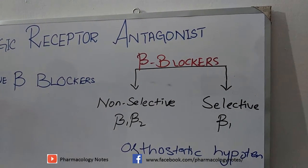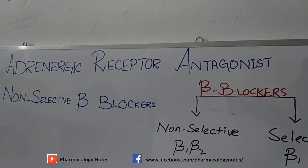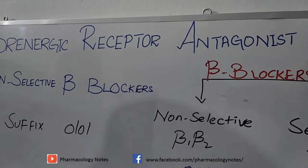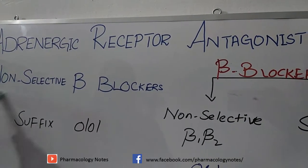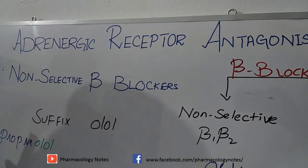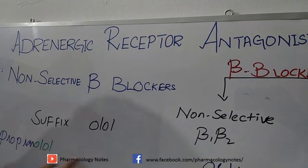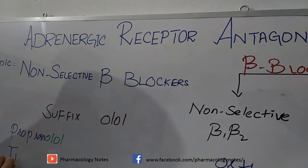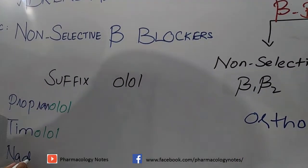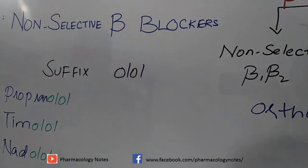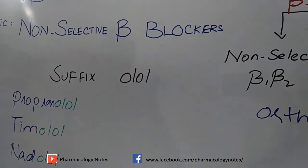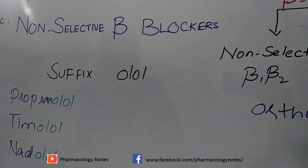Beta blockers typically have the suffix '-olol' in their name. The non-selective beta blockers include propranolol, timolol, and nadolol. These drugs act on beta-1 and beta-2 receptors non-selectively and have equal affinity for both receptor types.